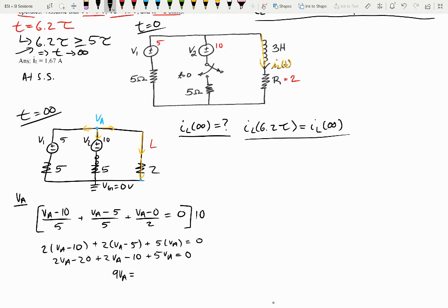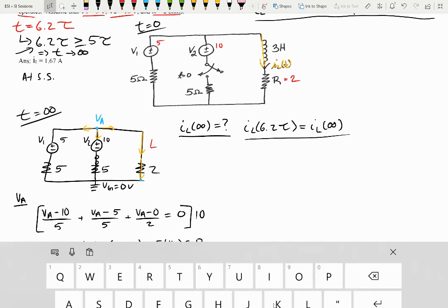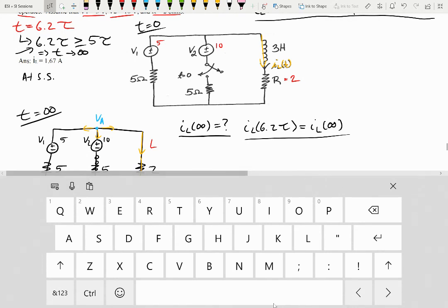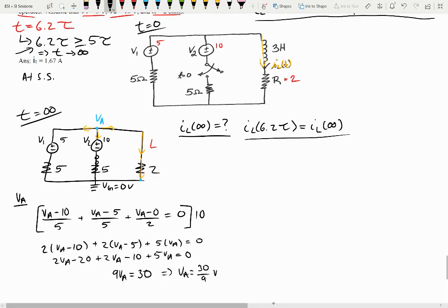Then we have negative 20, negative 10, some constant values. Move that over to the right-hand side. We get 30. So therefore, V of A is going to be equal to 30 over 9 volts. And that gives us about 3.33 volts.